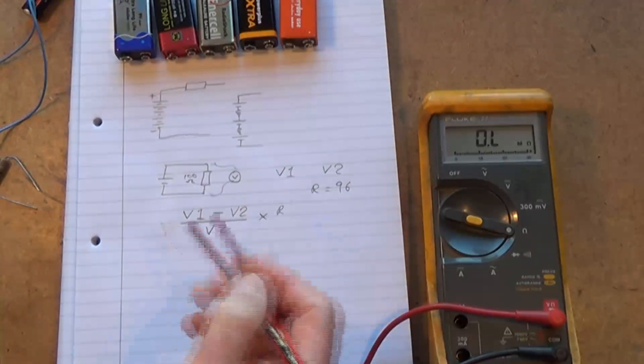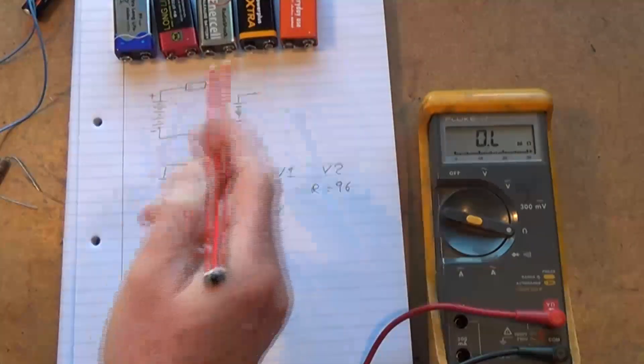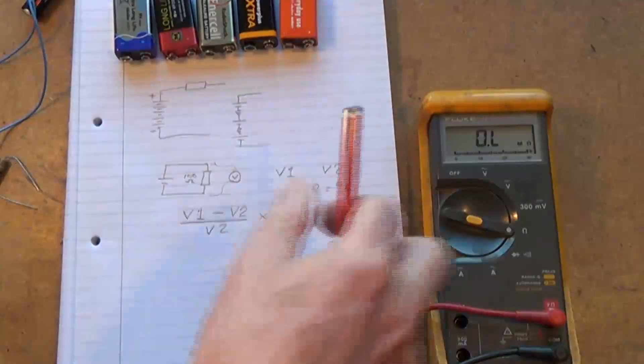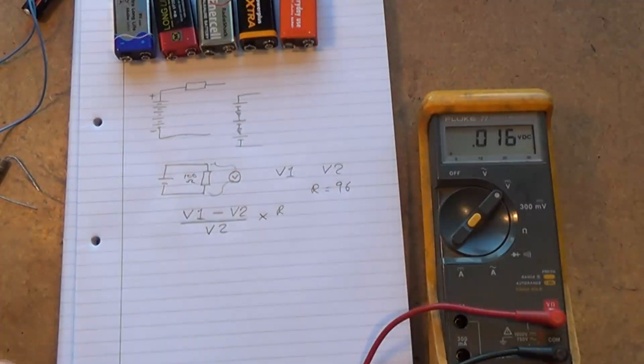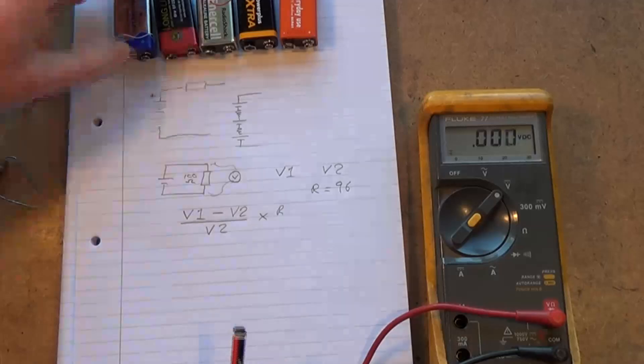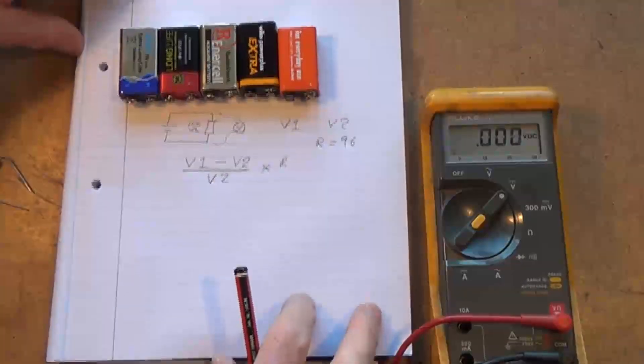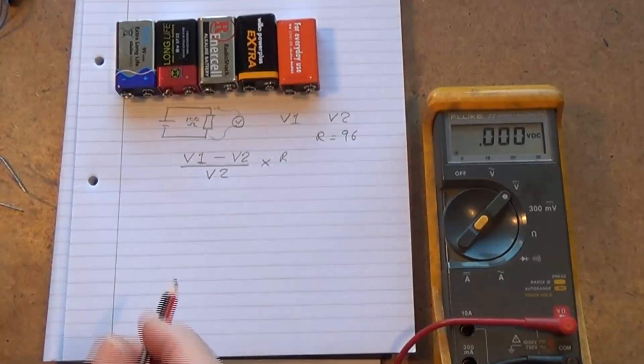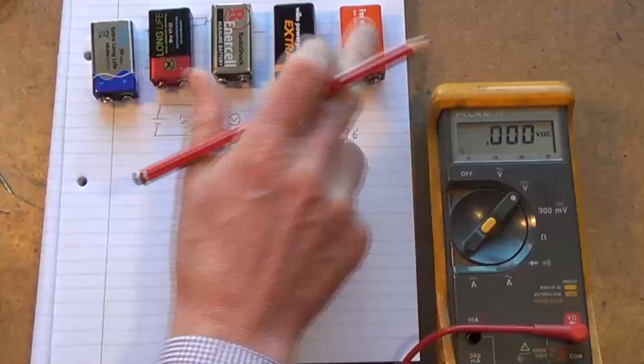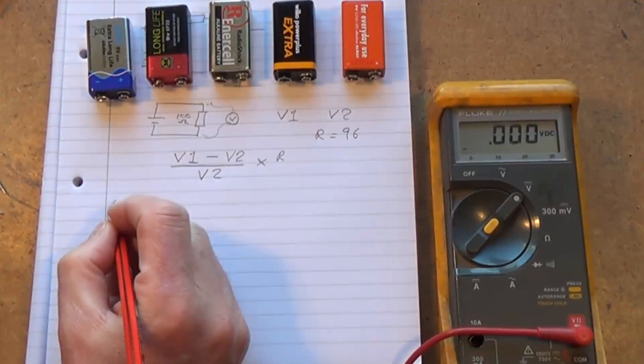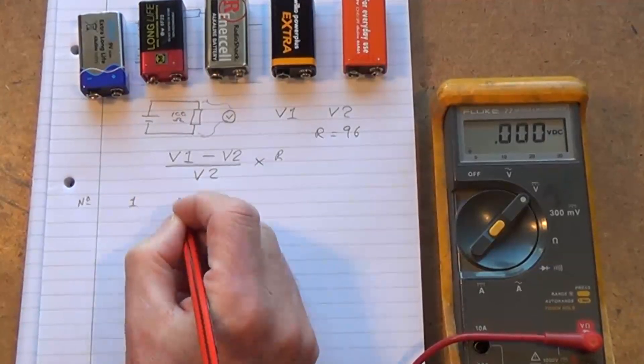I'll come back to that formula, but what I'm going to do is just run through these batteries and just check their internal resistance. So we're going to be on the DC voltage scale. Let's move those down to there. I hope I'm getting all of this in shot. So what have we got? One, two, three, four, five batteries. So we will number one, two, three, four, and five.